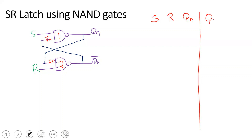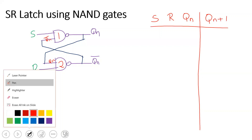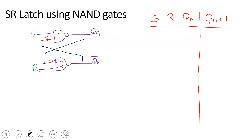The output is QN+1, which is the next state. QN is the present state and QN+1 is the next state. For example, suppose the latch device currently has a present state of 0.